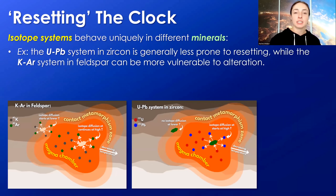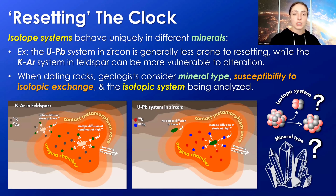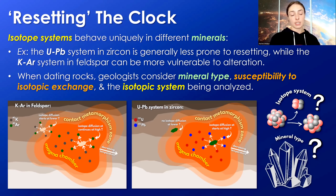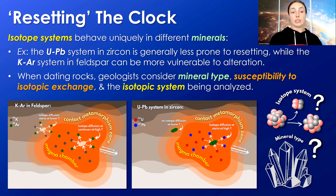It's also important to note that isotopic systems behave uniquely in different minerals. For example, the lead-uranium system in zircon is generally less prone to resetting, while the potassium-argon isotopic system in feldspar can be more vulnerable to alteration. When dating rocks, we therefore consider mineral type, susceptibility to isotopic exchange, and the isotopic system being used. By considering all these factors, we can really aim at getting a robust original age of crystallization versus a date of alteration, depending on what our goal is.